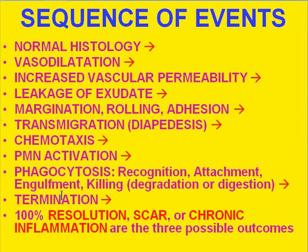This acute inflammatory linear sequence — you have to know the order more than anything, get them correct in order. The termination can result in 100% complete resolution back to normal histology, or as a scar — fibrosis — or as chronic inflammation if the triggering factors haven't gone away yet. So the three outcomes of acute inflammation are: 100% resolution, chronic inflammation, or scar, otherwise known as fibrosis.